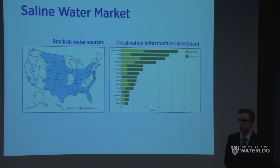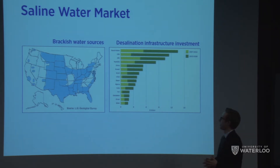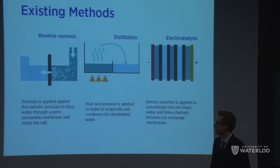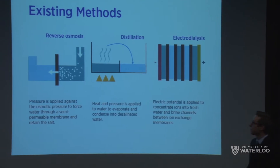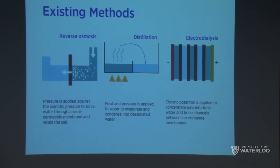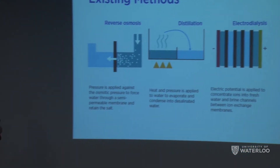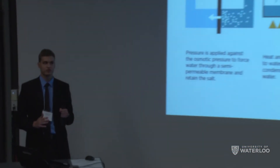In addition, the worldwide desalination infrastructure investment has been growing quite a bit over the last few years and will continue to grow as the population increases. The primary commercialized methods today are reverse osmosis — forcing a saltwater solution through a membrane to produce clean water — and distillation, which consists of evaporating water and then condensing it to get a purified form.